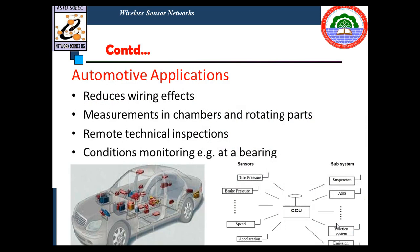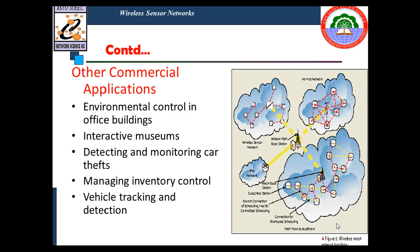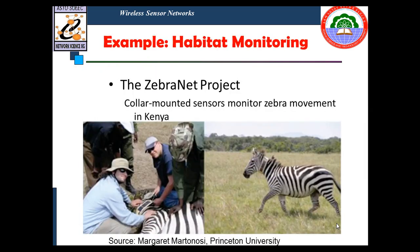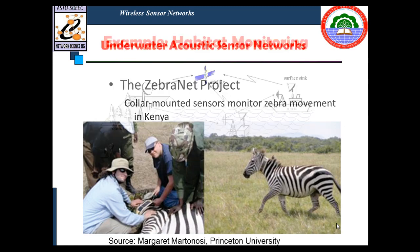In automotive applications, instead of having multiple cables between chambers and mechanical parts, integrating sensors allows monitoring the complete condition of the vehicle. In other commercial applications, sensors are used in interactive museums, theft detection, inventory control, vehicle tracking and detection. A real-time example is the Zebra Net project implemented in Kenya, where one sensor was integrated for each zebra to know the movement of that particular animal.